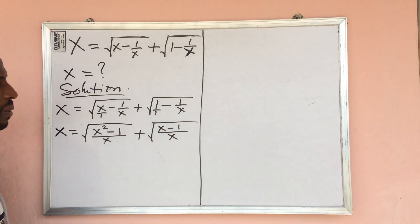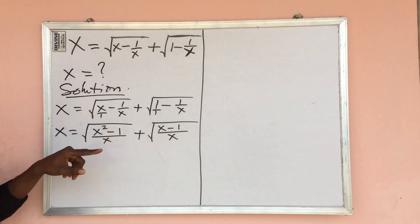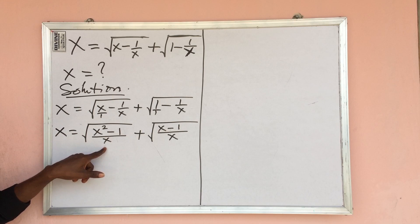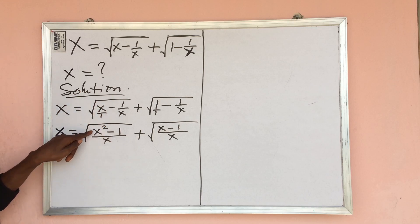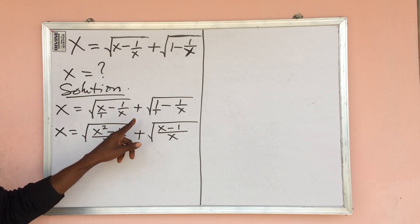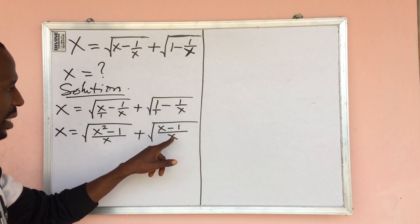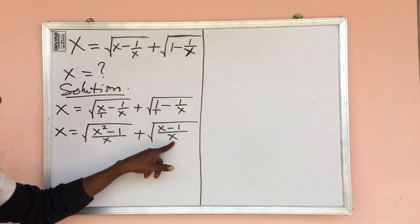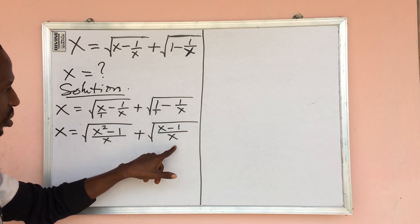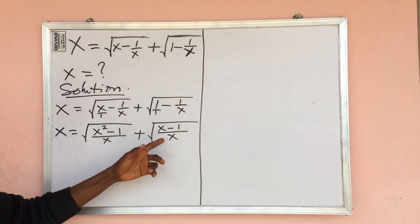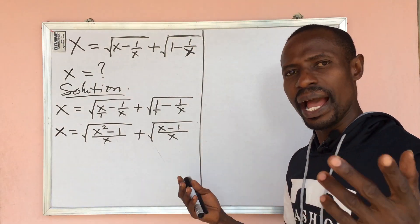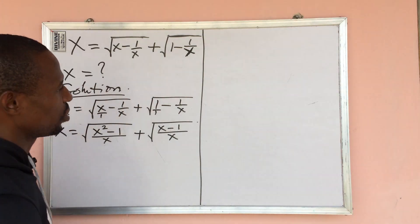What I just did here: the LCM of 1 and x is x. So 1 into x gives us x; x times x gives us x squared; and x into x gives us 1, times 1 gives us 1. For the second term, LCM of 1 and x is x; then 1 into x is x; x times 1 gives us x; minus sign carries through; x into x is 1, times 1 gives us 1.